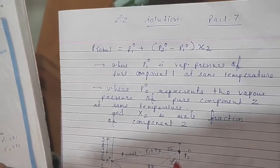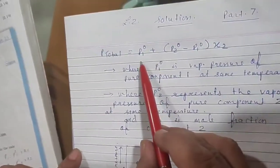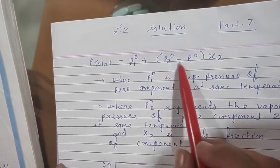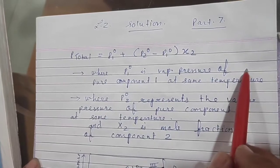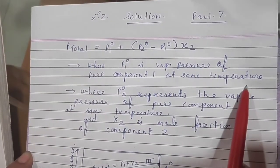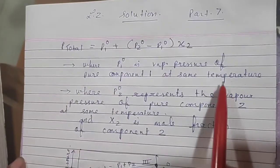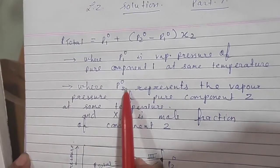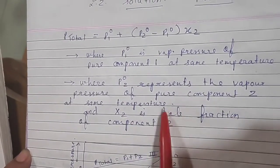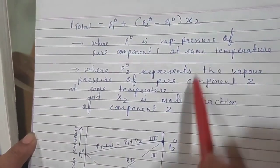Good morning students. Hope you all are well and making proper notes of these videos. Now let us continue lesson 2, Solution, part 7. Last time we had seen that P_total is equal to P1° plus (P2° minus P1°) into X2, where P1° is the vapor pressure of pure component 1 and P2° is the vapor pressure of pure component 2 at the same temperature. X2 is the mole fraction of component 2.